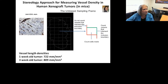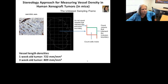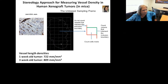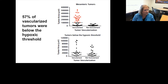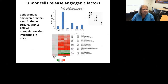The next question was what vessel density looks like in the tumor. We excised tumors and performed a stereology approach to measure vessel density in the xenograft human tumors grown in mice. This unbiased sampling frame removes selection bias across a large section. Remarkably, the one-week-old and three-week-old tumors had almost identical vessel length densities. We found that a very large fraction of the vascularized tumors were below the hypoxic threshold suggested by the mathematical modeling.